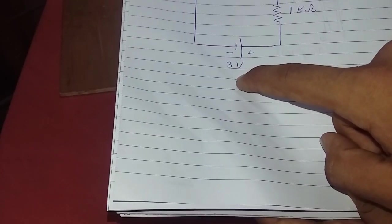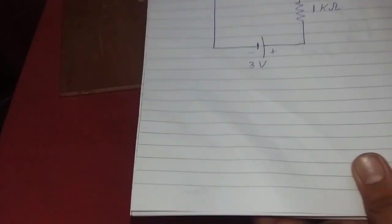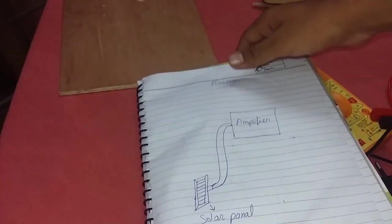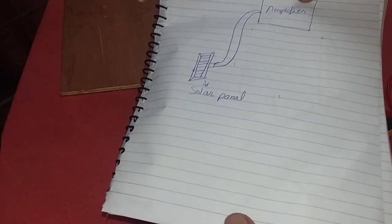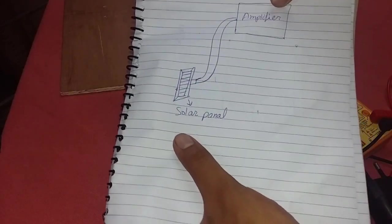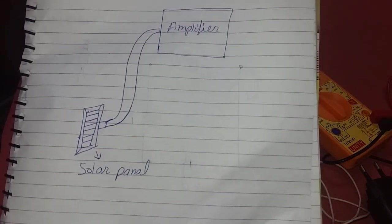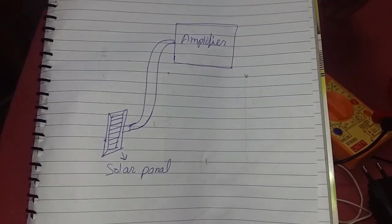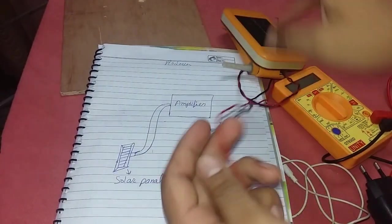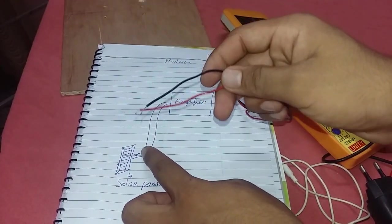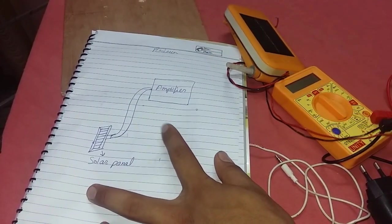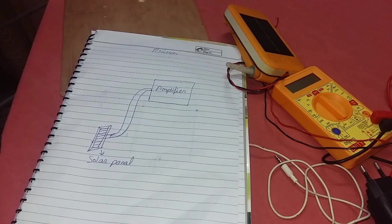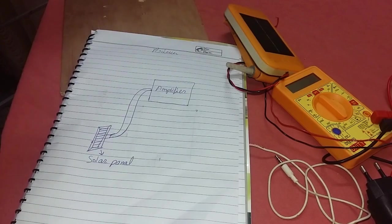And the circuit diagram for receiver side. This is the amplifier, this is the solar panel. Here you see the two wires of the solar panel, and these are the two wires of solar panel and amplifier wire. You can see the amplifier wire.